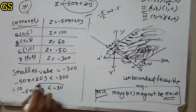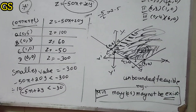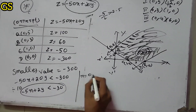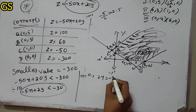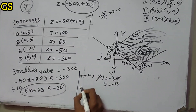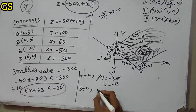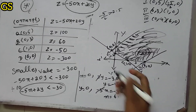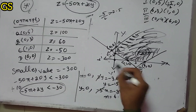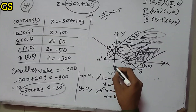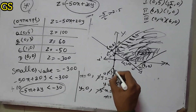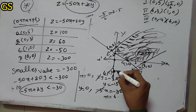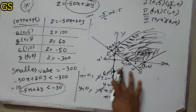To solve the dotted line, consider minus 5x plus 2y equals minus 300. When x equals 0, 2y equals minus 30, so y equals minus 15. When y equals 0, minus 5x equals minus 30, so x equals 6. The points are (0, minus 15) and (6, 0). This is plotted as a dotted line on the graph.